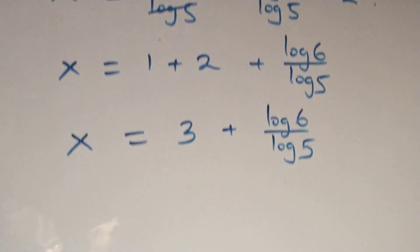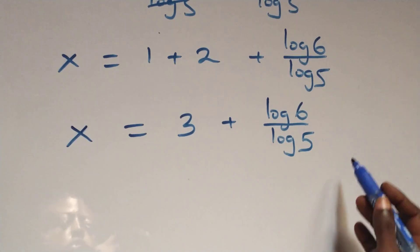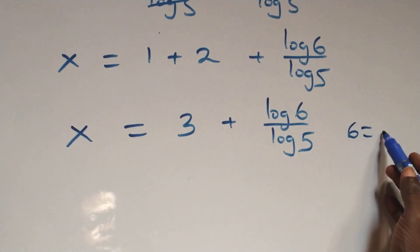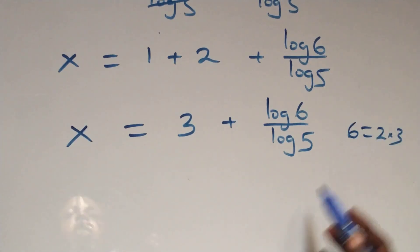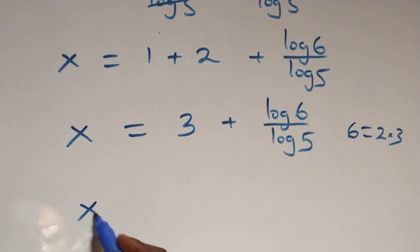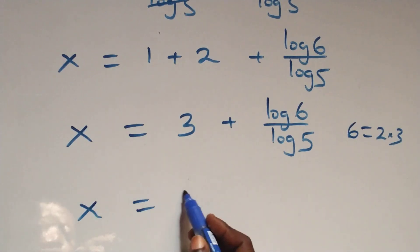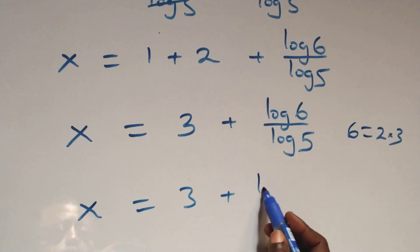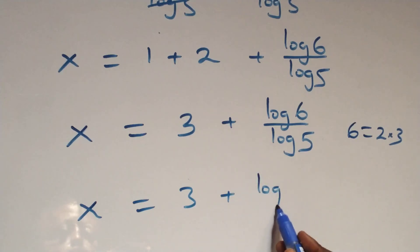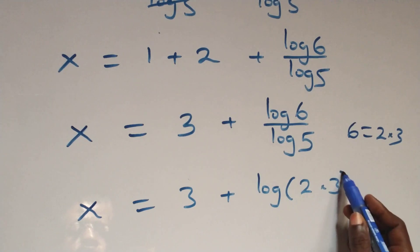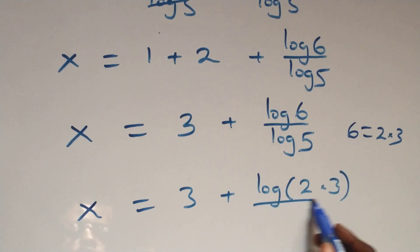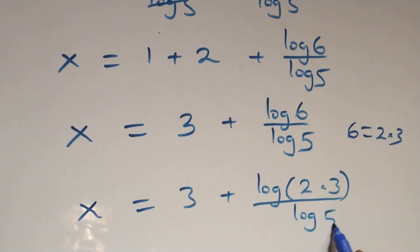The next step here, 6 also can be expressed as 2 times 3. And what we have becomes x equals to 3 plus log of 2 times 3 over log 5.